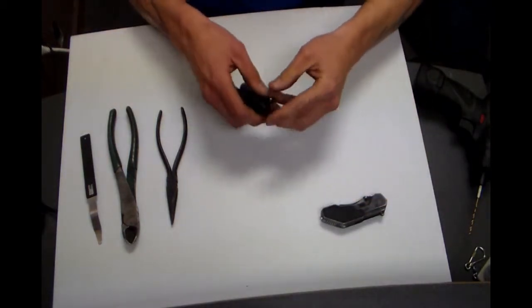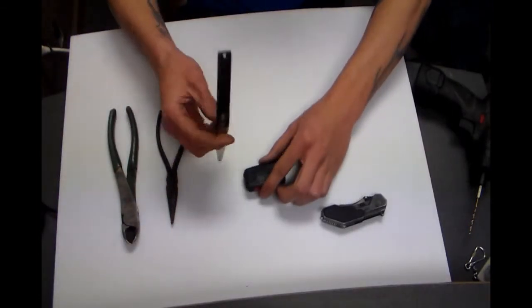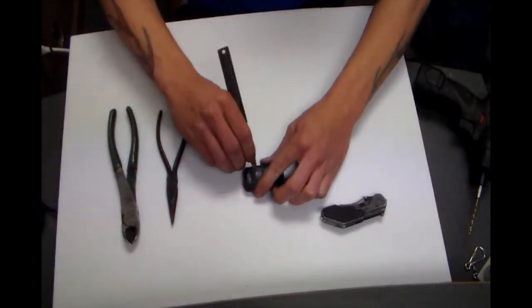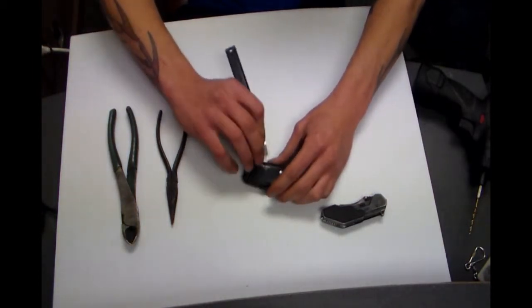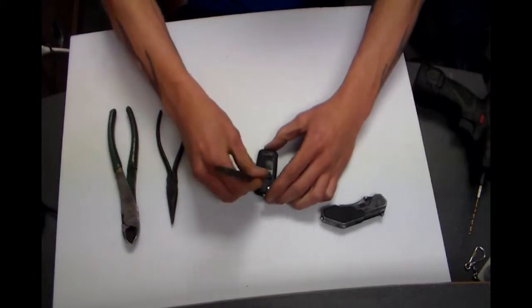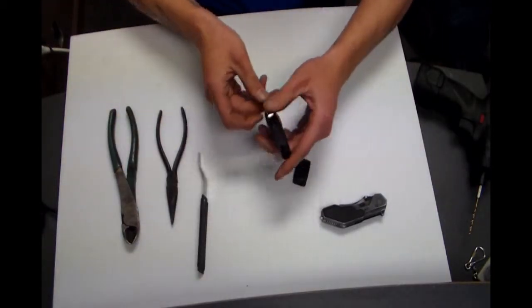First we need to take a flat blade and pop out the button pad. Once you get the button pad popped out, you can go ahead and open the key.